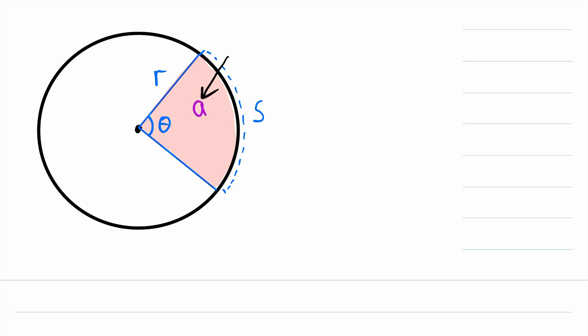To find A, the area of this sector, which is this shaded region here, we need to know some beautiful proportionality that's present in circles. The measure of this central angle, which we said is theta degrees, divided by the whole angle measure of the circle, which is 360 degrees because it is a circle...